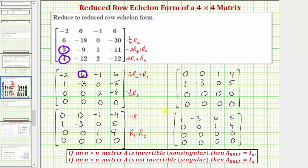Notice this is not a four by four identity matrix, which does tell us something about the given matrix. If an n by n matrix A is not invertible — meaning it's singular, meaning it does not have an inverse — then the matrix in reduced row echelon form will not equal the identity matrix. If in reduced row echelon form it was equal to the identity matrix, then the original matrix would be invertible, or non-singular, meaning it would have an inverse.